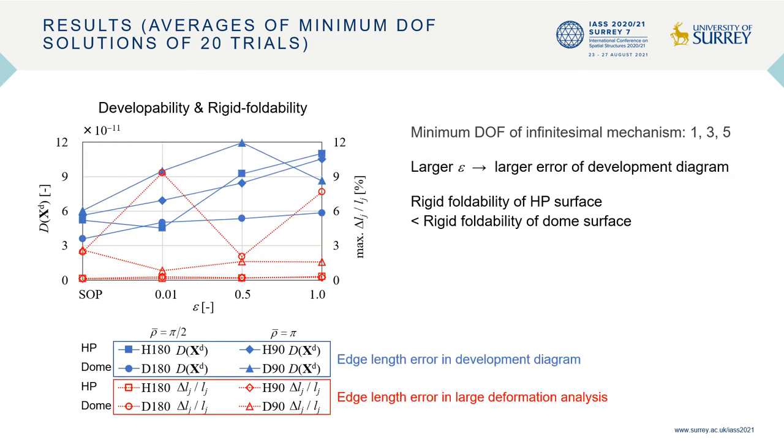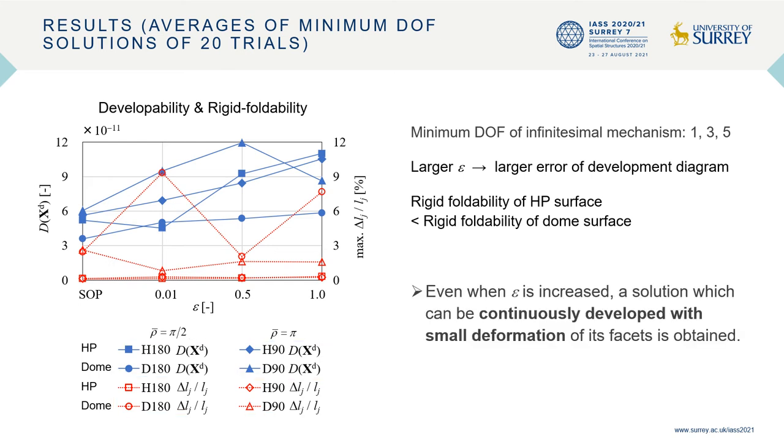Next, the edge length errors in the development diagrams and those in the large deformation analysis are shown. It can be concluded that, even when epsilon is increased, a solution which can be continuously developed with small deformation of its facets can be obtained.